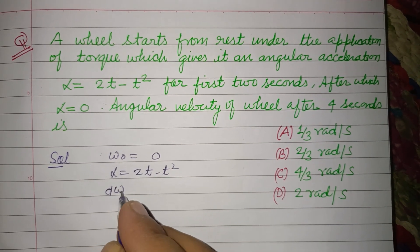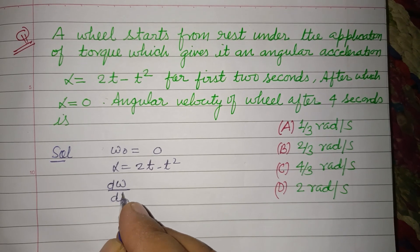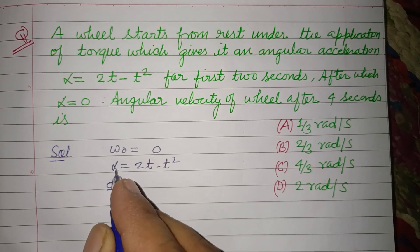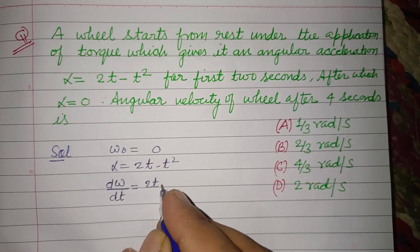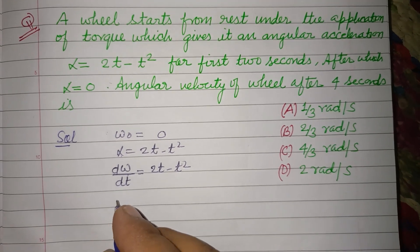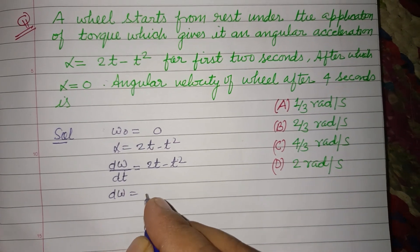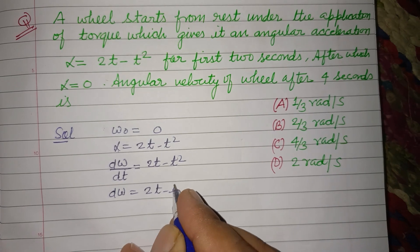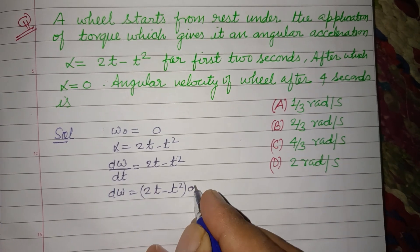α is equal to dω/dt, the rate of change of angular velocity is called angular acceleration. So 2t minus t², therefore dω = (2t - t²)dt.